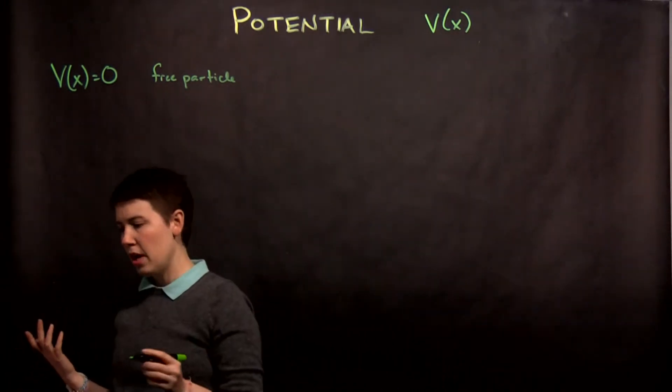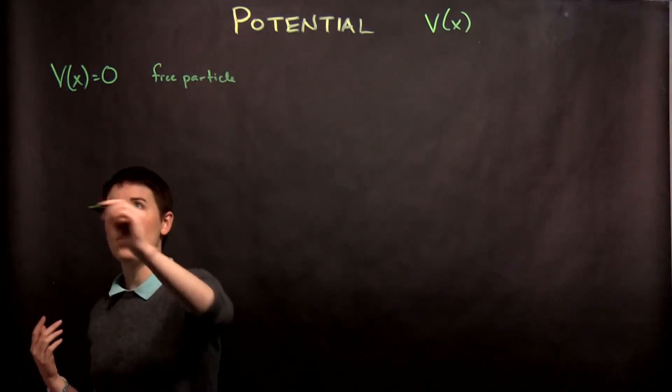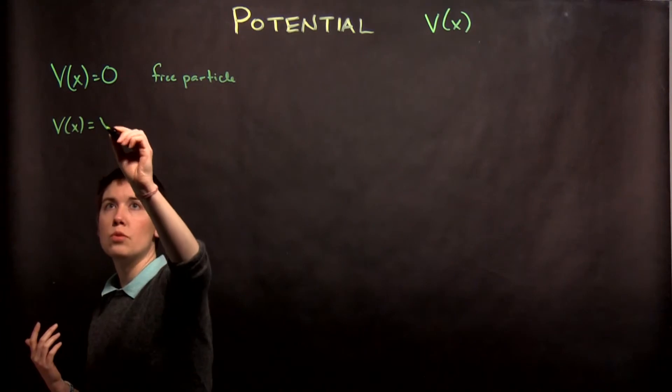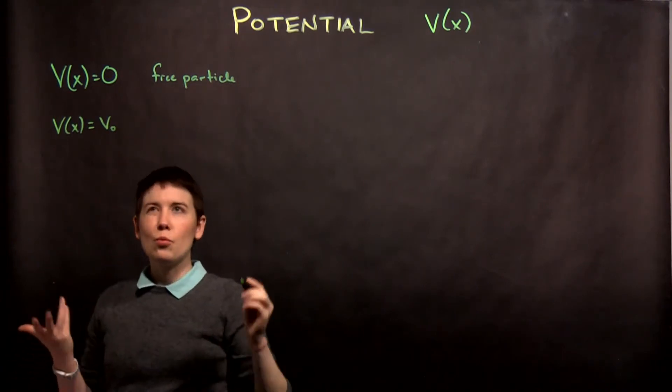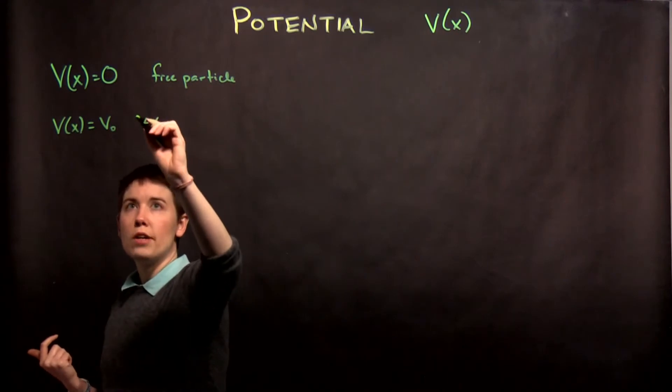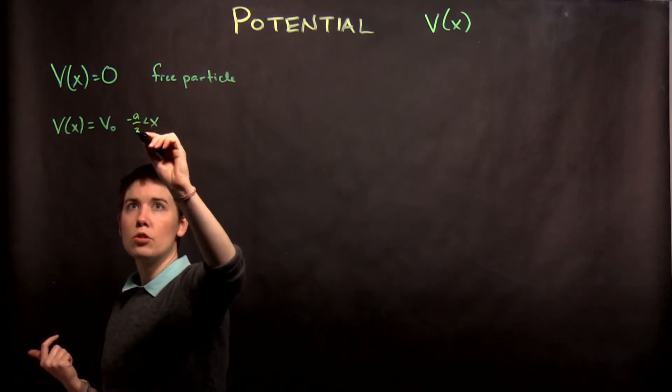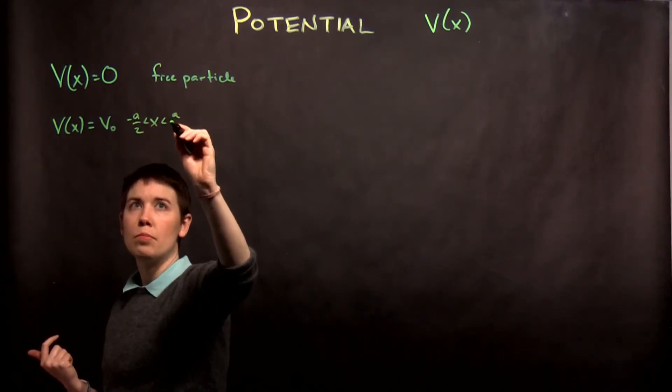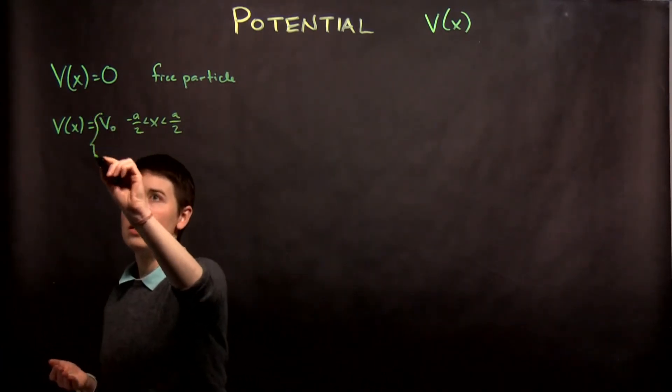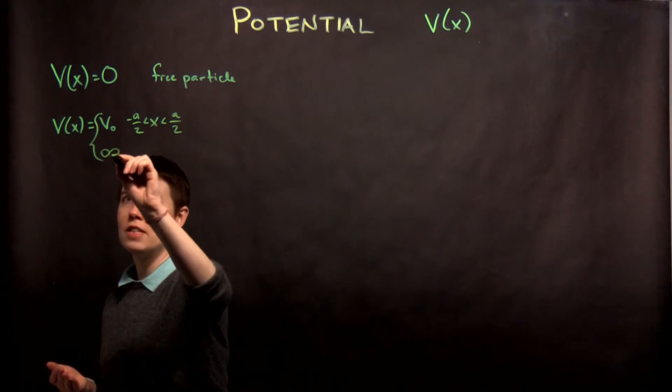What we're going to have, and there's a few different ways to write this, is that we're going to have V(x) equals V naught. We could write this, for instance, as x is greater than negative a over two and less than positive a over two, or zero to l, and then it is infinity elsewhere.